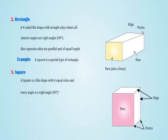3. Square: A flat shape with four equal sides and every angle is a right angle, 90 degrees. All sides are equal in length. Each internal angle is 90 degrees. Opposite sides are parallel.